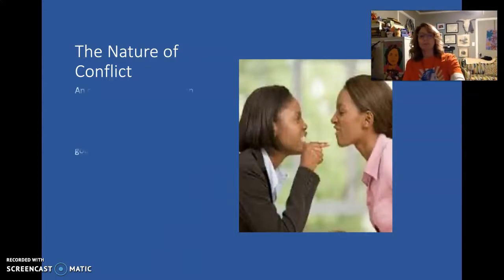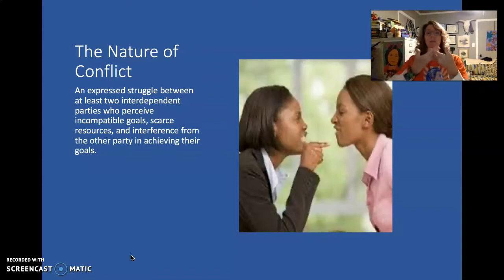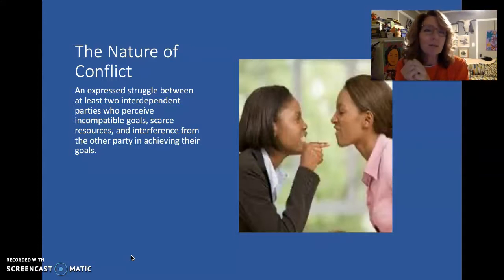So the nature of conflict, I'm going to give you kind of a definition. It's an expressed struggle between at least two interdependent parties or interdependent people. I want you to think back about what the word interdependent means. It means that the two people are connected in some way. Their relationship has been formed so they matter to each other. They need each other. That's key because we don't usually have conflict with people we don't care about. An expressed struggle between at least two interdependent people who perceive incompatible goals, so they're not on the same page. Scarce resources, meaning there's not going to be enough, fear of not having enough, and interference from another party that's helped, that's from achieving their goal.